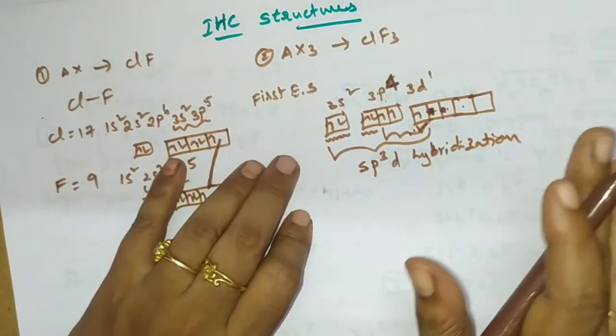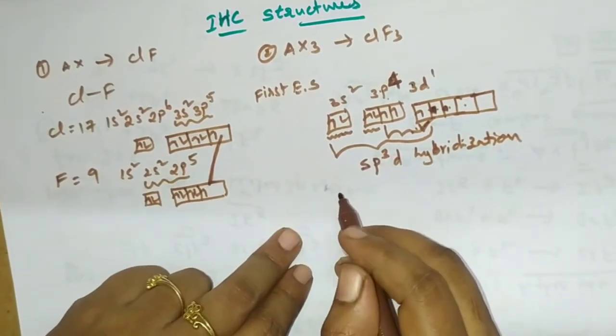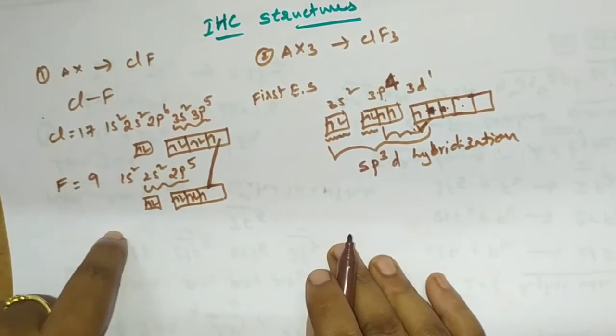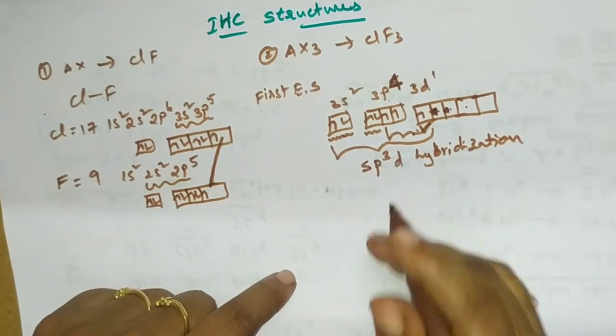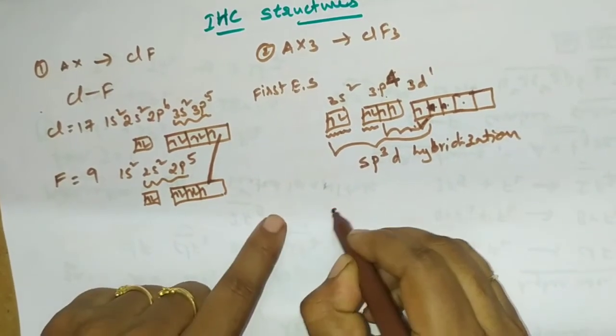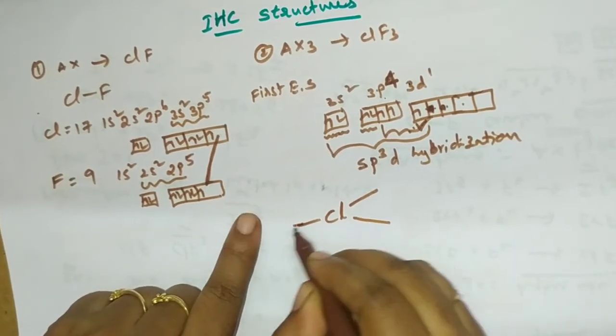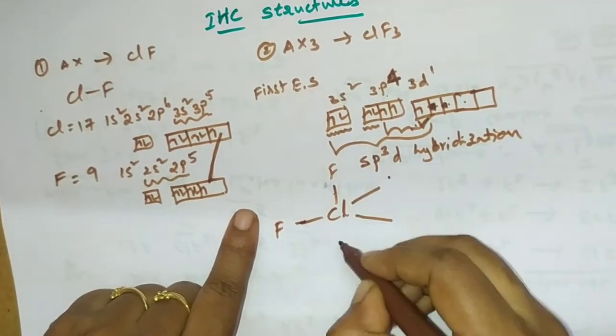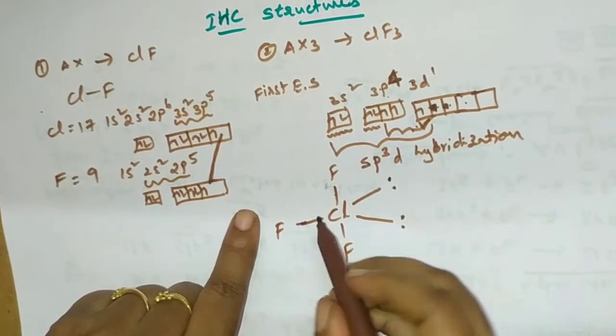So here we will be working with the fluorine configuration. Here we will form 3 electrons. The orbital structure showing 1, 2, 3, 4, 5.